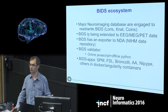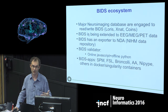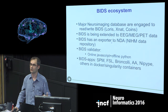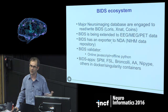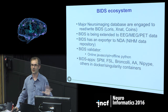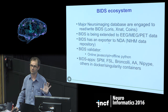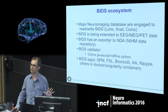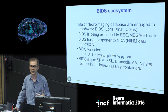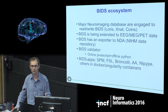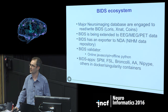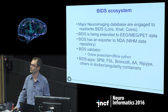BIDS very rapidly spurred a large ecosystem. Major databases want to export or import in BIDS because it's simple. It's been extended quickly to EEG, MEG, and PET data. BIDS has an exporter to NDA, the NIMH data repository, and some grants now require you push data there. There's a BIDS validator - a JavaScript validator that Chris has written and led very energetically and successfully. There are now many BIDS apps - we had a week at Stanford with 25 people making tools compatible with BIDS so you can push a BIDS directory, run a Docker container, and get results.